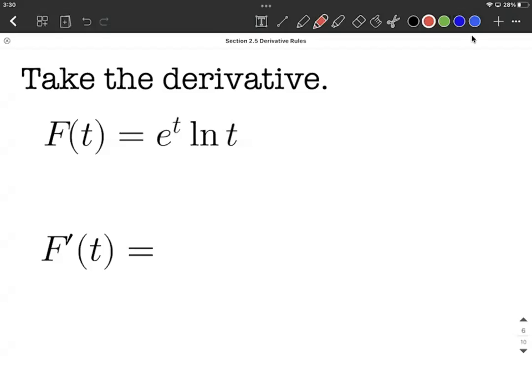Okay, let's take the derivative of big F of t equals e to the t times natural log of t. So you notice we have two things multiplied together.